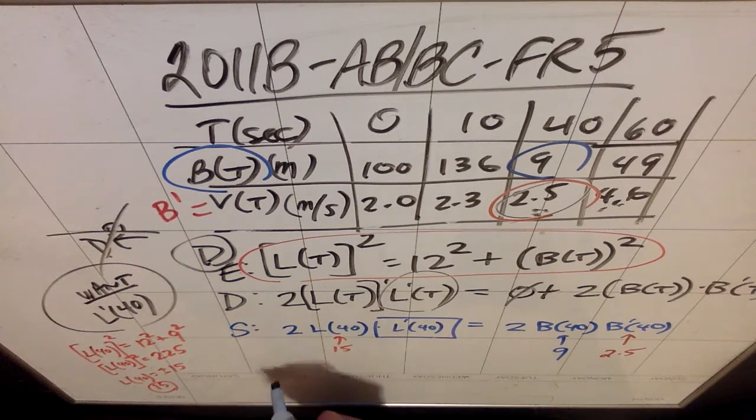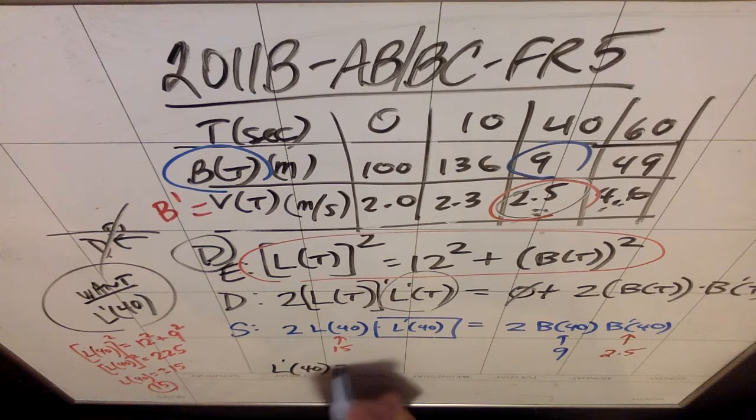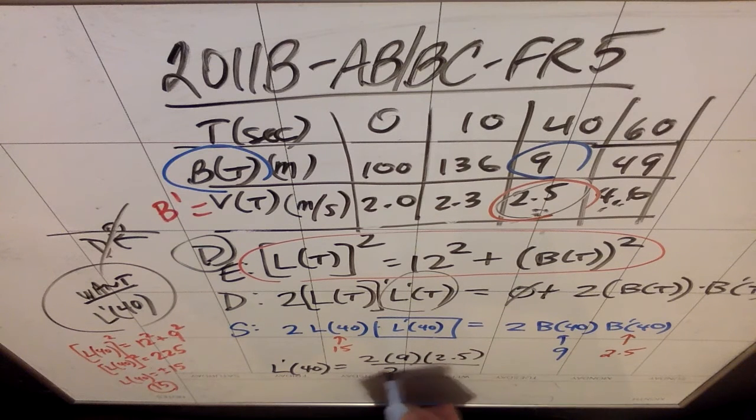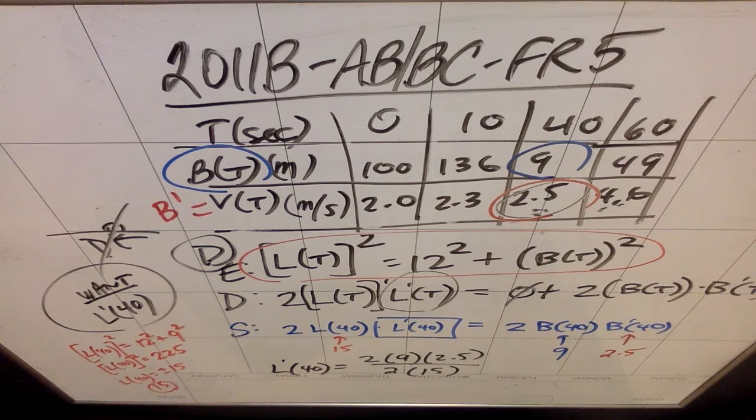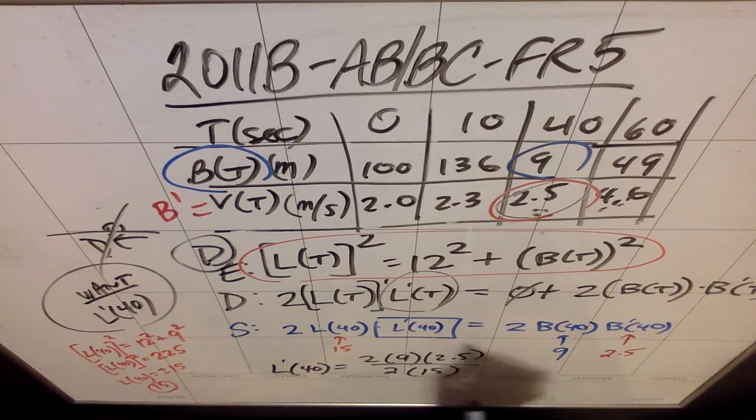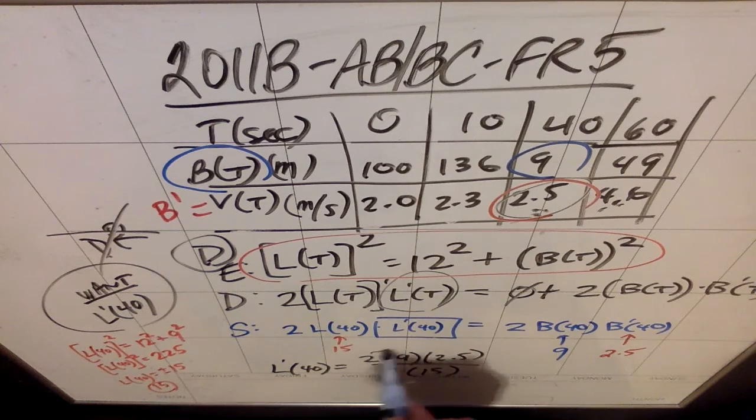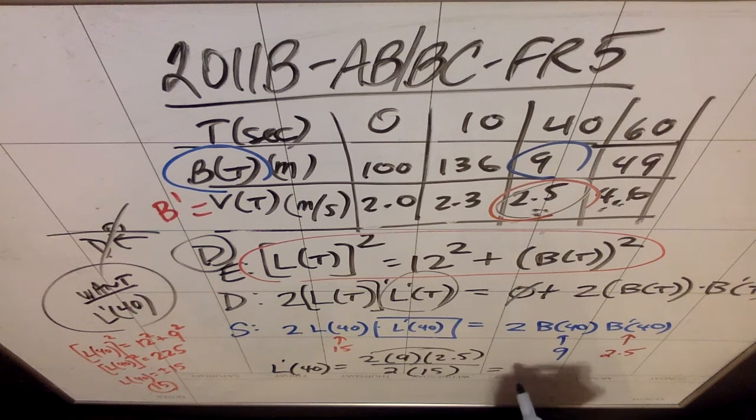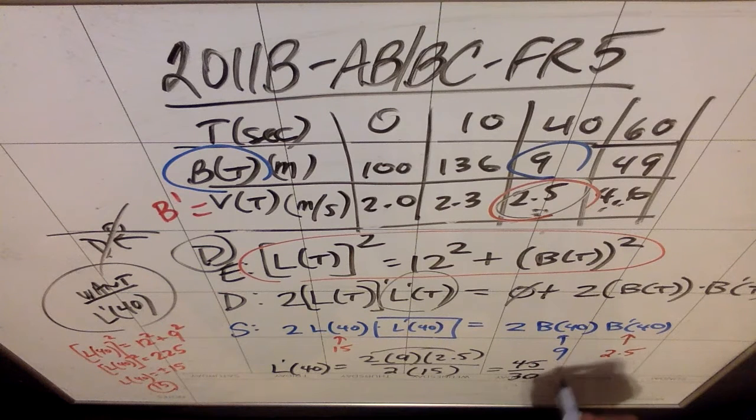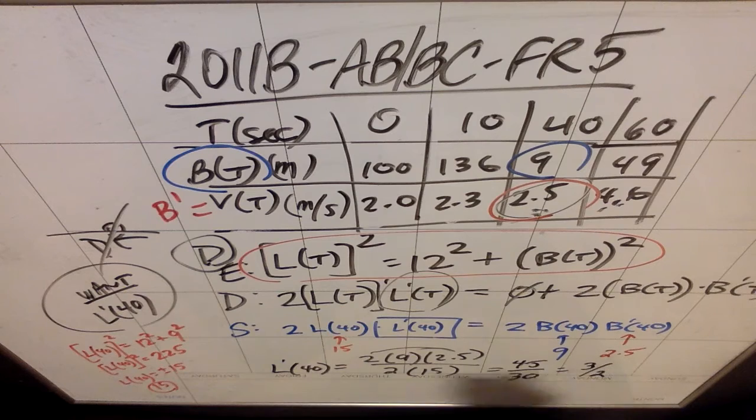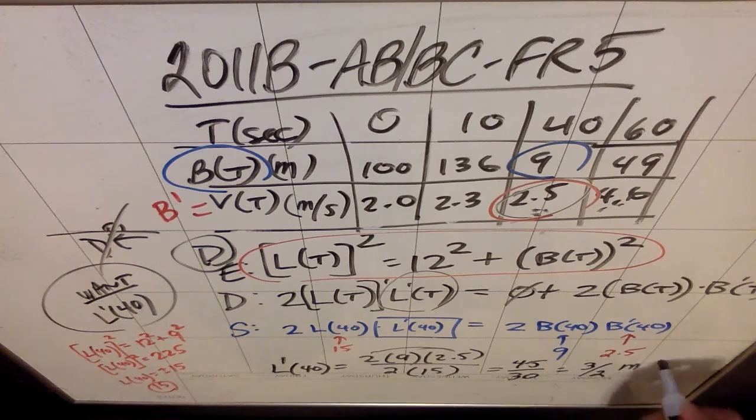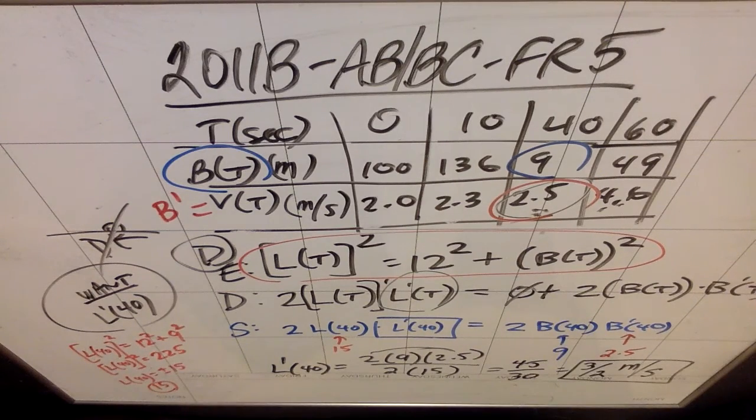All you have to do is solve for L'(40). When I solve, I'm going to get that L'(40) equals 2 times 9 times 2.5 over 2 times 15. I don't want to deal with the 2.5, I'd much rather deal with a 5. So I end up getting that the top is 9 times 5, which is 45 over 30. I can cancel a 15 out of that. And I get that this is 3 halves. And because L was measured in meters and the time here is in seconds, so it should be meters per second. And that's the end of the problem.